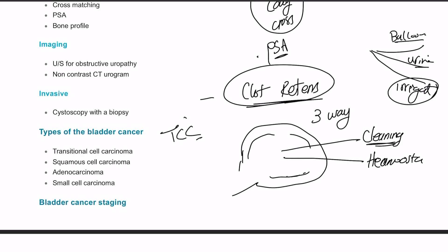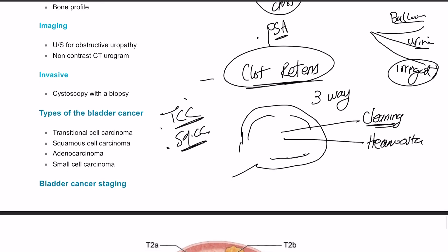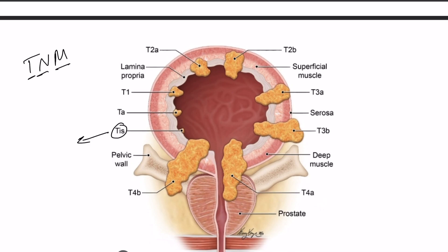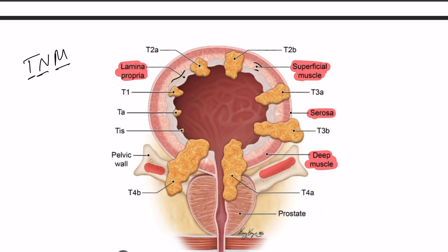Types of bladder cancer: transitional cell carcinoma is the commonest, then squamous cell carcinoma as in schistosomiasis, and adenocarcinoma. For TNM staging: TIS is carcinoma in situ; TA is slightly bigger without basement membrane invasion; T1 invades the lamina propria; T2A and T2B involve the superficial and deep muscle layers respectively; T3A reaches the serosa without invasion, T3B goes beyond the serosa; T4A involves pelvic bones and surrounding structures, and T4B is beyond the pelvic bones.